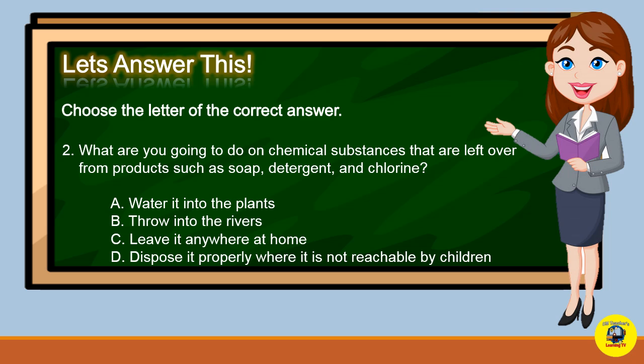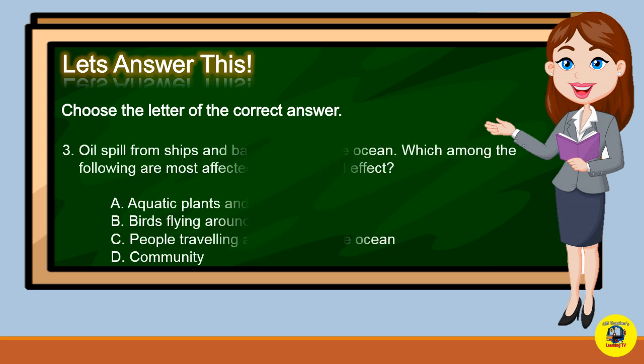Number 2: What are you going to do with chemical substances left over from products such as soap, detergent, and chlorine? A. Water it into the plants. B. Throw it into the rivers. C. Leave it anywhere at home. Or D. Dispose of it properly where it is not reachable by children. What is your answer?